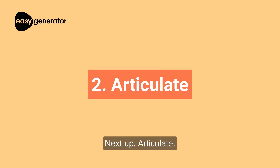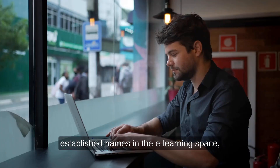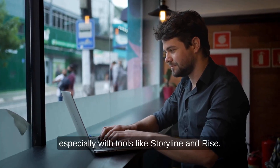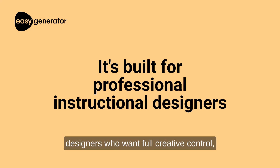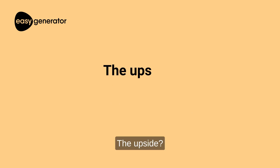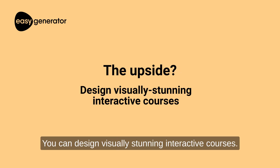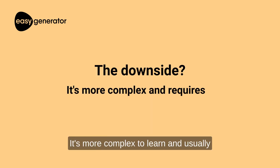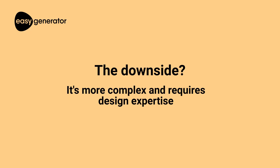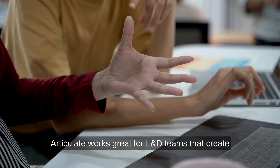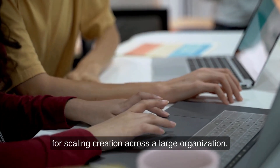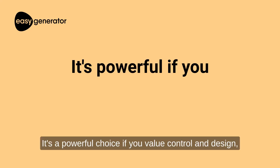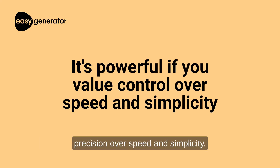Next up, Articulate. Articulate is one of the most established names in the e-learning space, especially with tools like Storyline and Rise. It's built for professional instructional designers who want full creative control, from animations to branching scenarios. You can design visually stunning interactive courses, but it's more complex to learn and usually requires design expertise. Articulate works great for L&D teams that create highly customized courses, but might not be ideal for scaling creation across a large organization. It's a powerful choice if you value control and design precision over speed and simplicity.